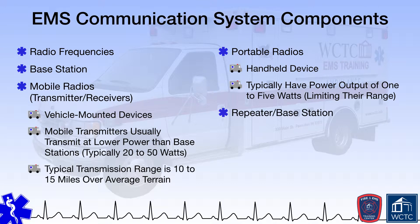To extend the physical coverage of a radio communications system, many agencies utilize repeaters, which receive and retransmit signals through a specialized base station transceiver designed for that purpose. Repeaters are often located strategically throughout a response area to provide broad coverage, commonly using tall buildings, water towers, or geographic features like elevated hills or mountains to extend the reach of their antennas.